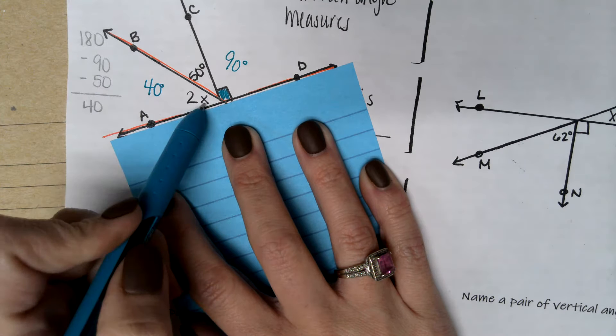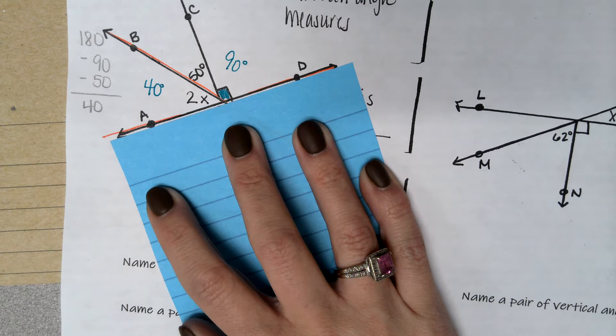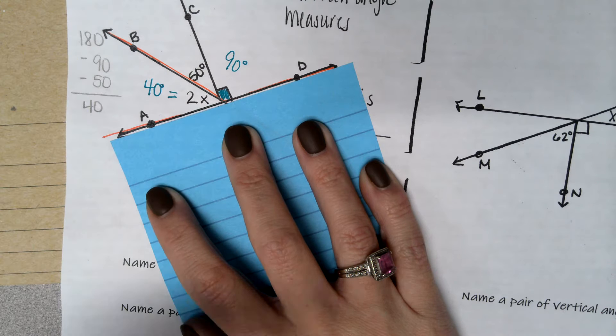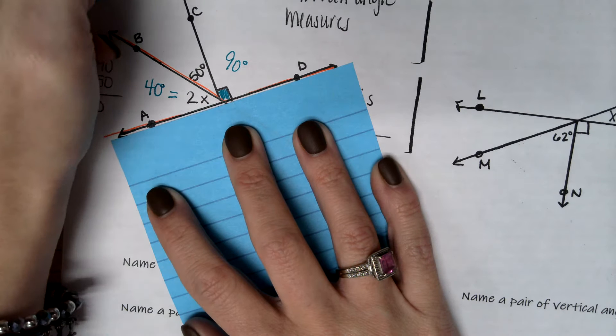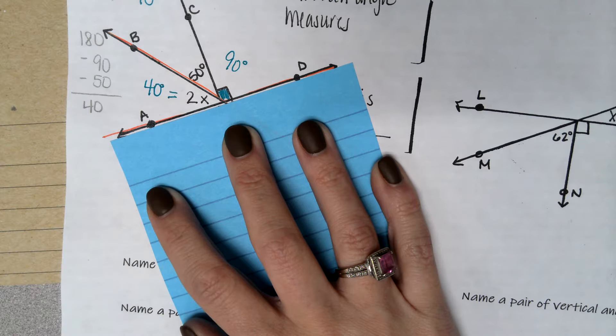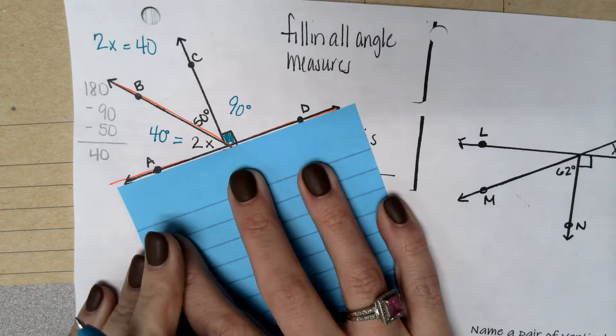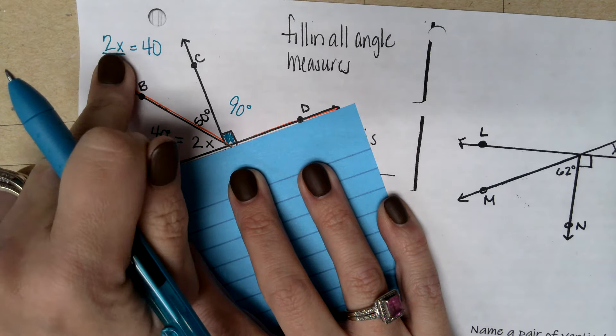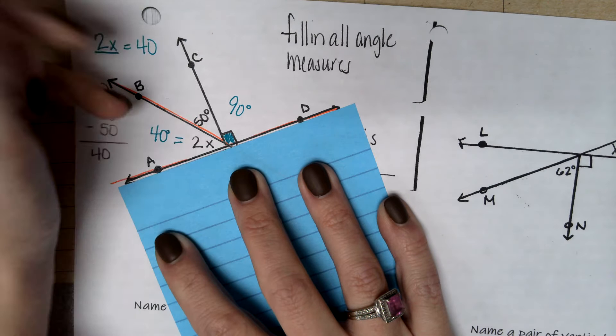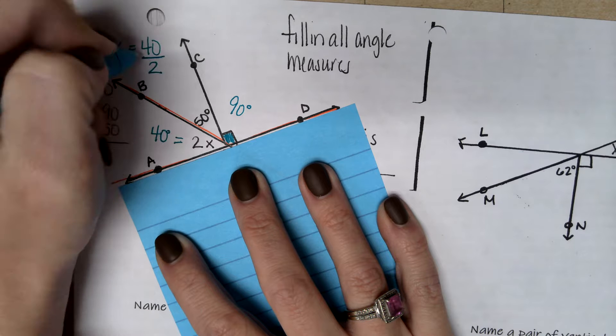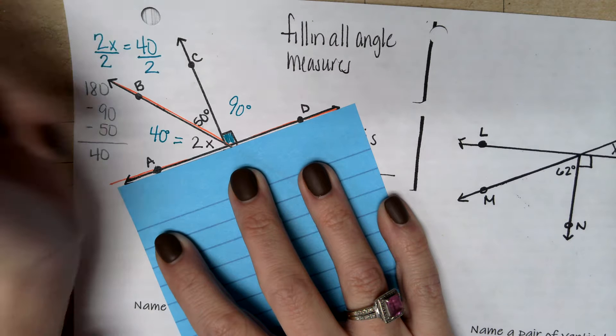But we also need to know what is the value of x. So it says 2x equals 40. So we can set up a simple one-step equation. 2x equals 40 to find the value of x. So I might say, the two numbers smushed together. That means multiplication. The opposite of multiplying is to divide. 40 divided by 2 is 20.